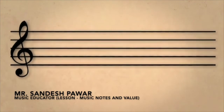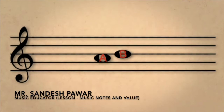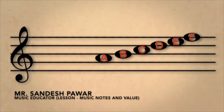On the staff with the treble clef, A is on the second space. Continuing up, the next note is B on the third line, then the third space is C, the fourth line is D, the fourth space is E, the fifth line is F, and above the staff is G.